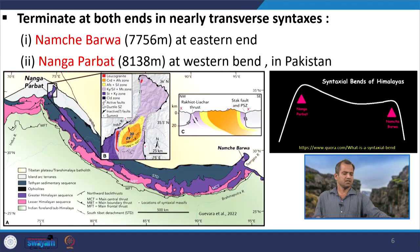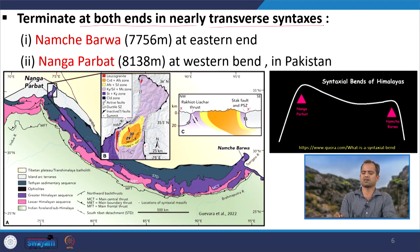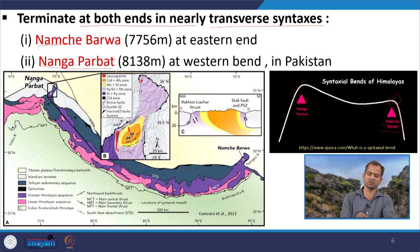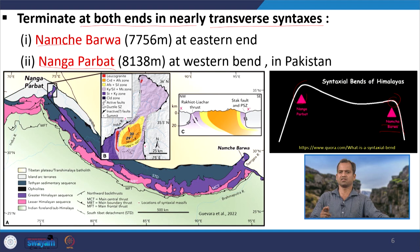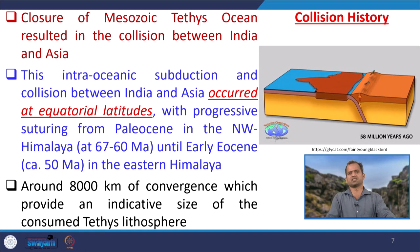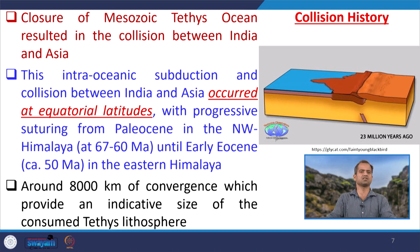The Himalayan system terminates at both ends in nearly transverse syntaxes. There is an eastern syntaxis at Namche Barwa and a western syntaxis at Nanga Parbat. These two syntaxes represent where the Himalayan trend takes a sudden bend — two prominent syntaxes are present.